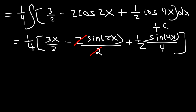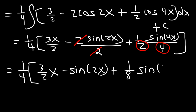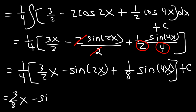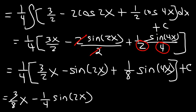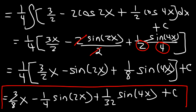2 divided by 2 is 1, and then we can multiply 2 and 4 to get 8. So this equals one fourth times (3 over 2 x minus sine 2x), and then one fourth times one half is one over 8 times sine 4x. If you distribute the one fourth to every term you get 3 over 8 x minus one fourth sine 2x — be careful not to make a mistake there — and then one over 4 times one over 8 gives one over 32 sine 4x plus C. You can leave your answer with the one fourth factored out, or distribute it — it's up to you.